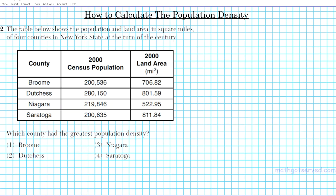In question number two we're going to be assessed on how to calculate population density. The table below shows the population and land area in square miles of four counties in New York State at the turn of the century. The second column is the population and the third column is the land area. The question asks which county had the greatest population density — so we're finding the population density of all four counties and comparing them.